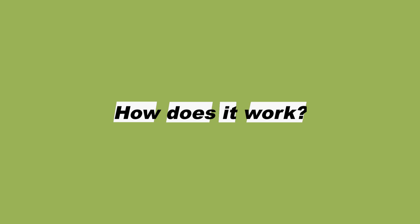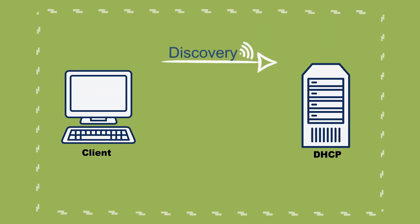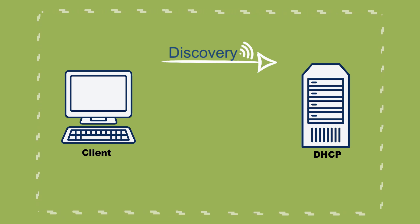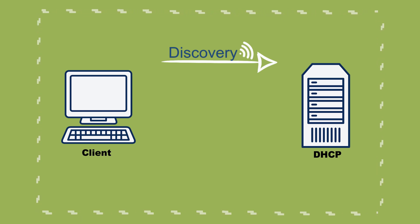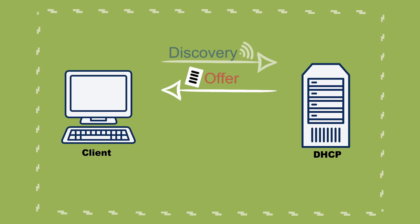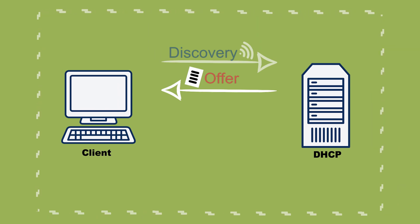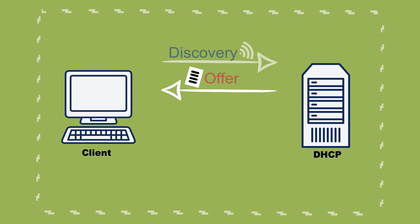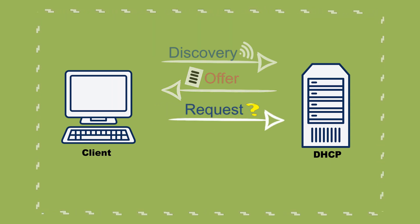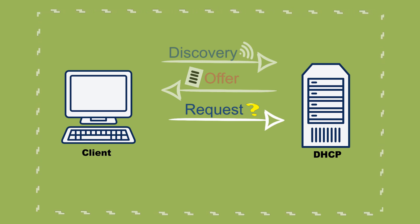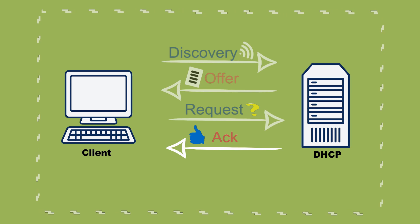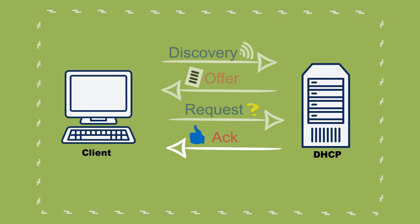How does DHCP actually work? When a device connects to a network for the first time, it broadcasts a discovery message seeking aid from any nearby DHCP services. Upon receiving the discovery message, the DHCP service will reply with an offer containing network configuration parameters. But before the device can start using the parameters, it must reply with a request, upon which the DHCP service will send an acknowledgement confirming that the device is now free to do so.